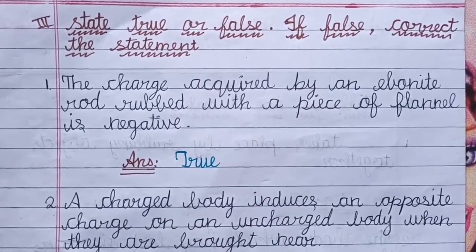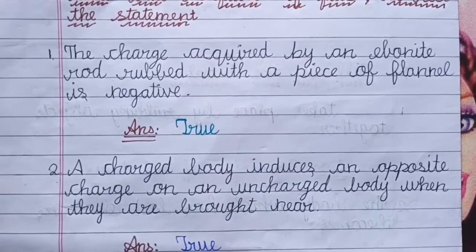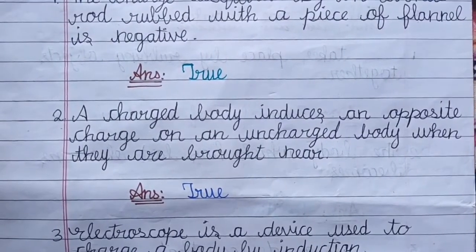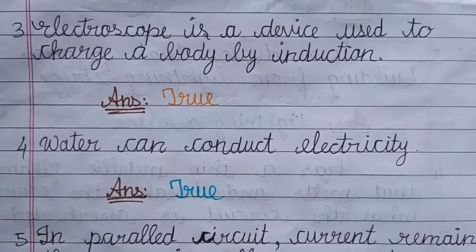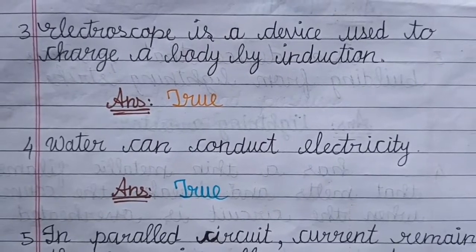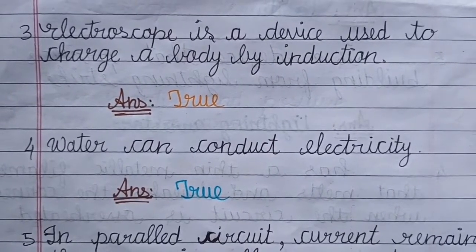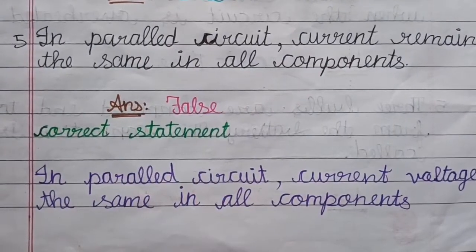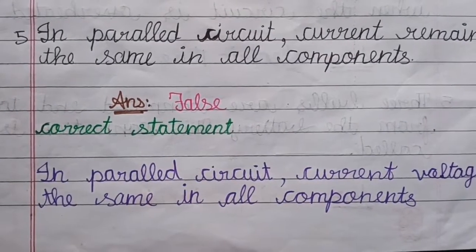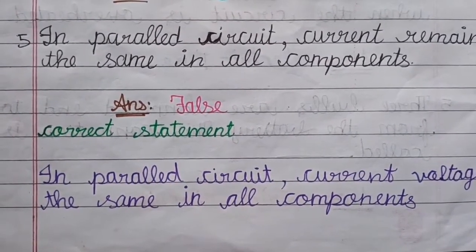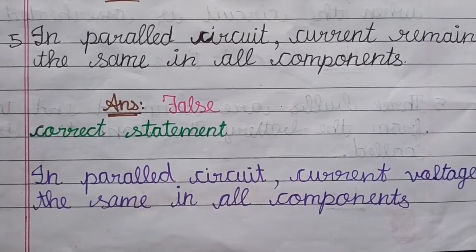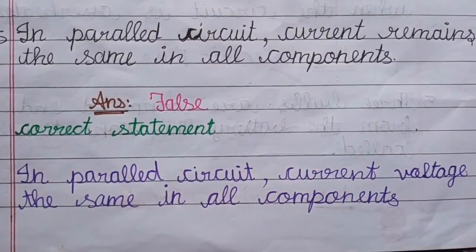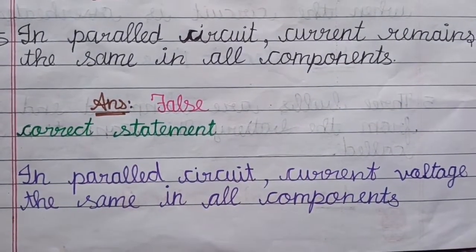Question No. 5, Answer: Series Circuit. Promo Letter 3: State True or False — if false, correct the statement. Question No. 1, Answer: True. Question No. 2, Answer: True. Question No. 3, Answer: True. Question No. 4, Answer: True. Question No. 5, Answer: False. Correct Statement: In a Parallel Circuit, the voltage remains the same across all components.